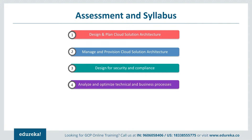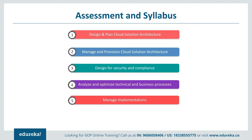The fourth section is analyzing and optimizing technical as well as business processes. It includes the software development lifecycle plan, continuous integration and continuous deployment, the process of troubleshooting or post-mortem analysis, structured testing and validation, enterprise processes, stakeholder management, change management, and decision-making processes.